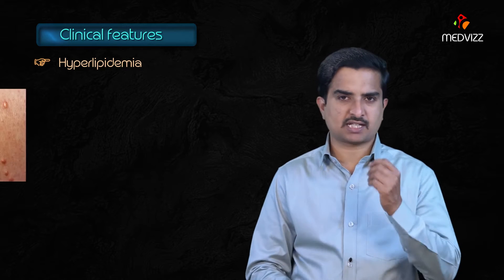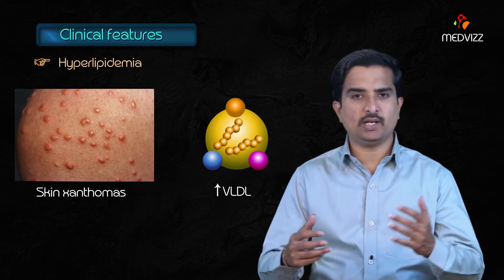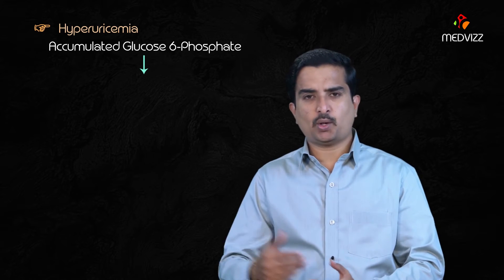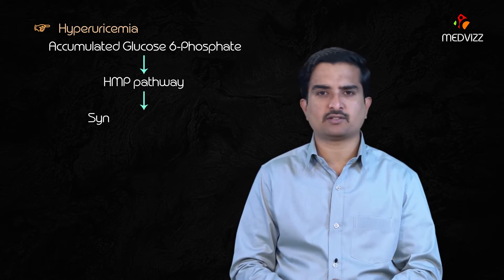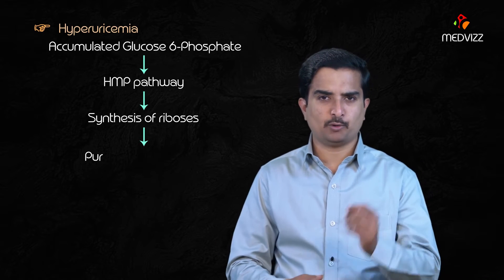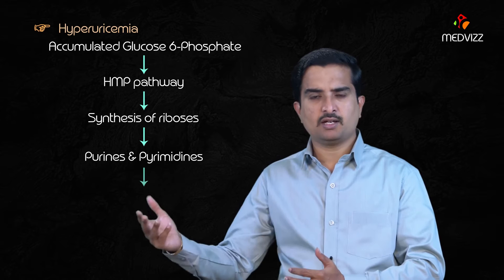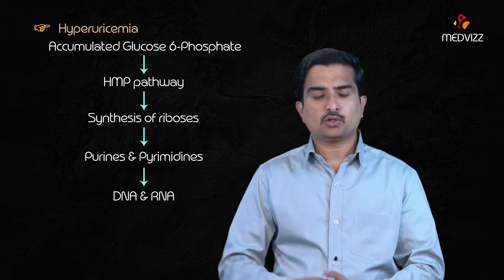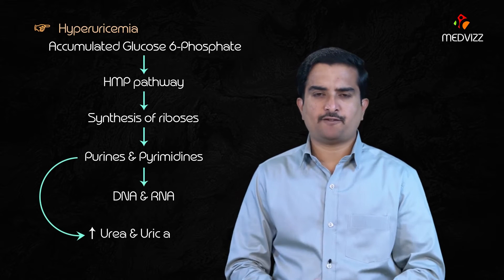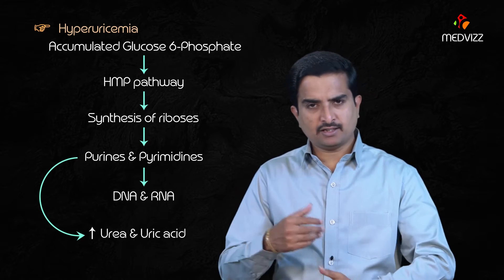Hyperlipidemia is seen, leading to skin xanthomas and increased VLDL. Hyperuricemia is also seen because the accumulated glucose-6-phosphate is diverted into the HMP pathway, which is responsible for synthesis of ribose, which in turn is responsible for synthesis of purines and pyrimidines, leading to synthesis of DNA and RNA. Metabolism of purines and pyrimidines causes increased production of uric acid.